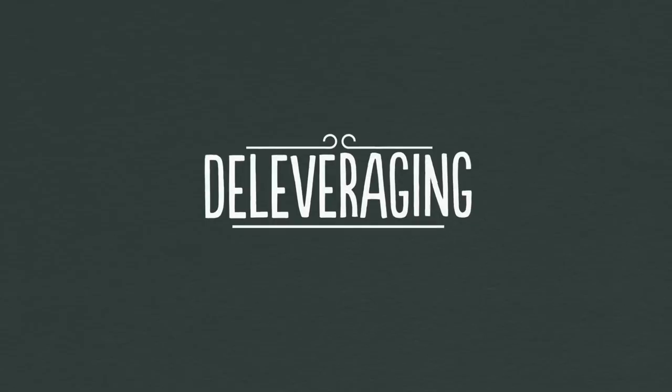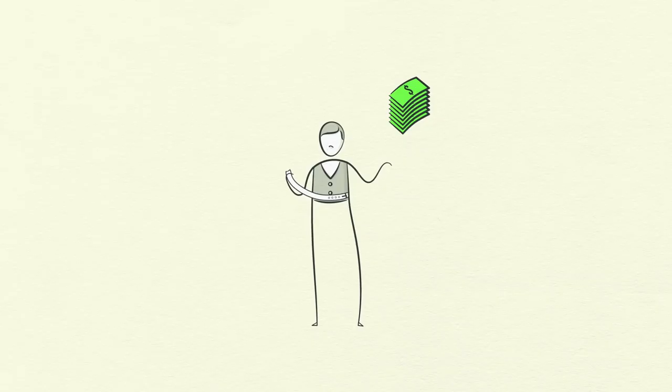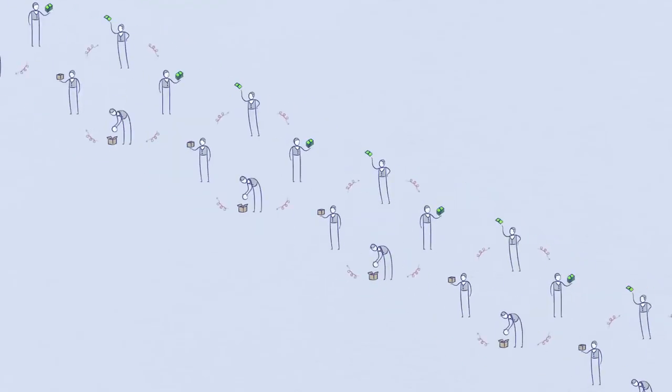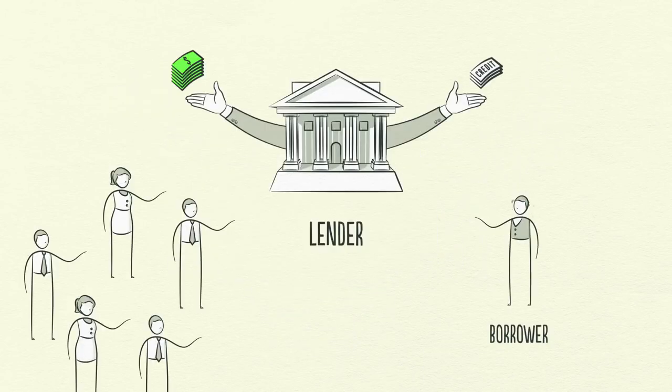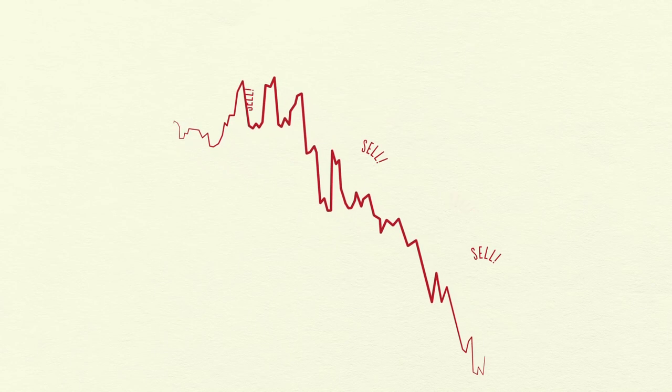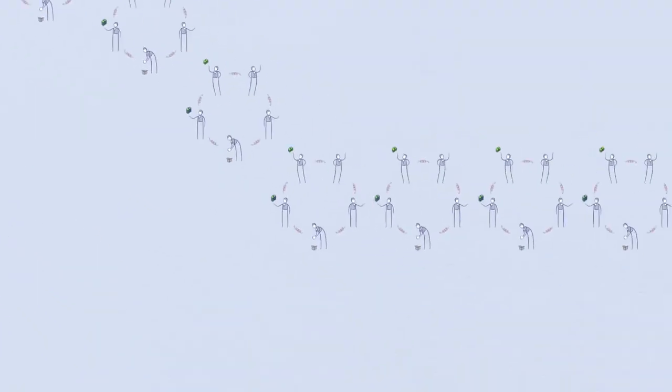Now the economy begins deleveraging. In a deleveraging, people cut spending, incomes fall, credit disappears, asset prices drop, banks get squeezed, the stock market crashes, social tensions rise, and the whole thing starts to feed on itself the other way. As incomes fall and debt repayments rise, borrowers get squeezed. No longer creditworthy, credit dries up, and borrowers can no longer borrow enough money to make their debt repayments.